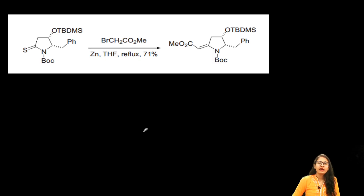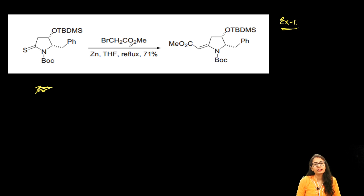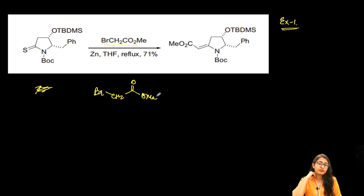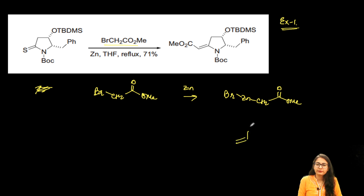Now for example one — try it yourself first. The starting material is BrCH₂CO₂Me, a simple alpha-haloester. In the presence of zinc, you can write the intermediate as Zn–CH₂–CO₂Me. Now make it attack onto the carbonyl. In this question, instead of a carbonyl, you have a thioaldehyde where the oxygen is replaced by sulfur.